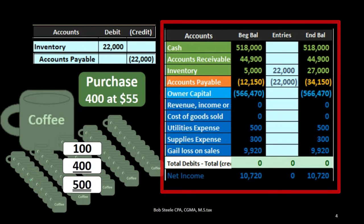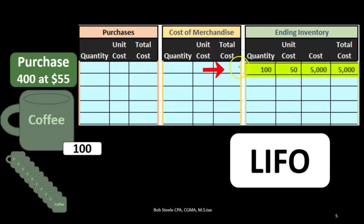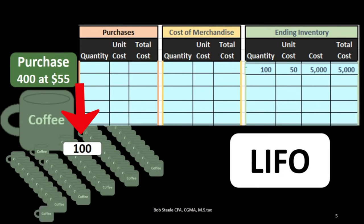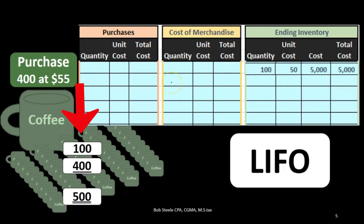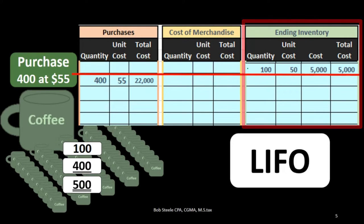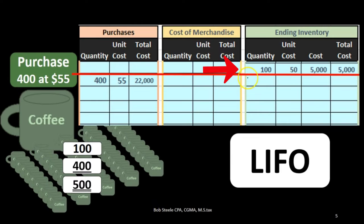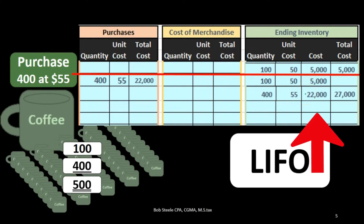There is no change with that journal entry approach. We now have $27,000 on the books for inventory and need to back it up in our worksheet. We have the original 100 units at $50 and the new 400 units at $55 — two layers. Bringing both layers down under the red line, we have 100 units at $50 ($5,000) plus 400 units at $55 ($22,000), totaling $27,000 — matching the trial balance.